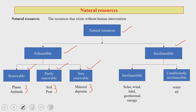For inexhaustible resources, there are two types. The first type — truly inexhaustible — includes solar, wind, tidal, and geothermal energy. The second type — conditionally inexhaustible — includes water and air.